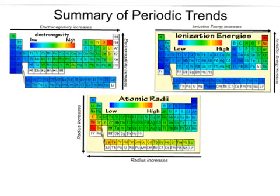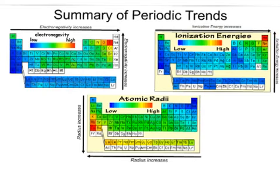As a quick summary of the periodic trends: electronegativity — the ability of an atom in a molecule to attract shared electrons to itself, basically hog the electrons — increases going towards the right and going up, so we have our highest value in fluorine. Ionization energy — the energy required to remove an electron from an individual atom in the gas phase — increases towards the right and going up as well, since it requires more energy to take an electron away from something that really wants to have it. The atomic radius increases as we go down and increases toward the left.